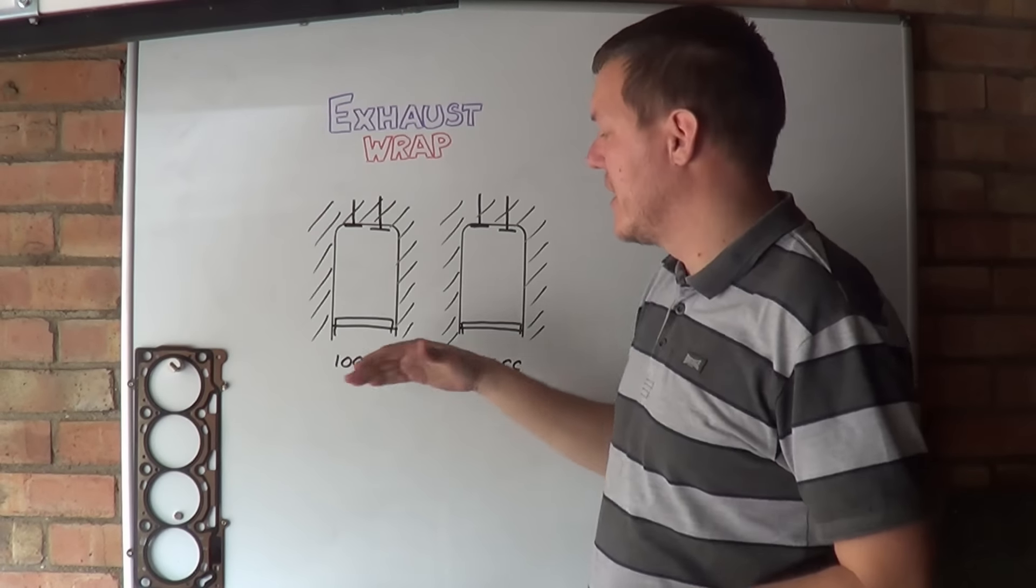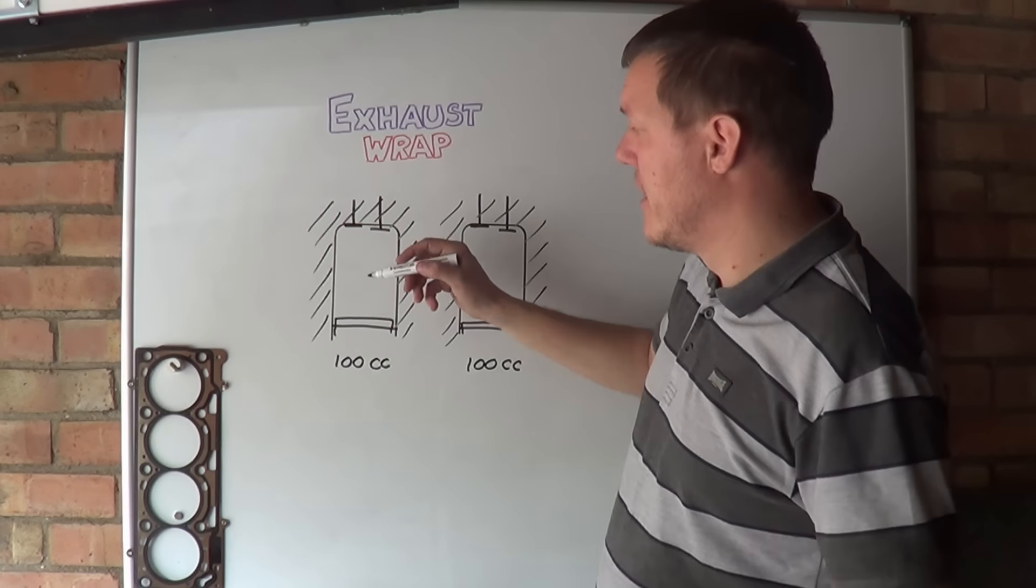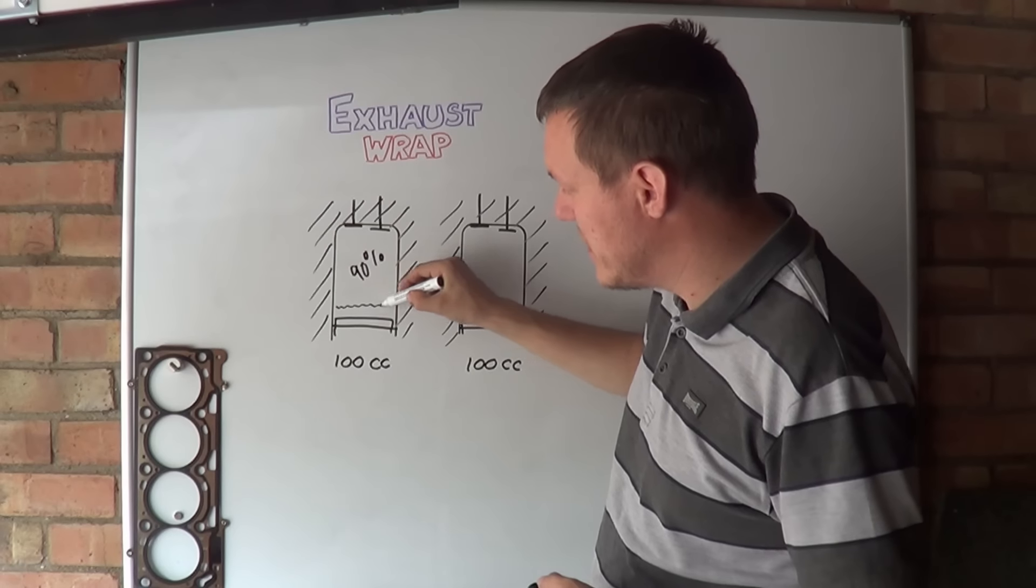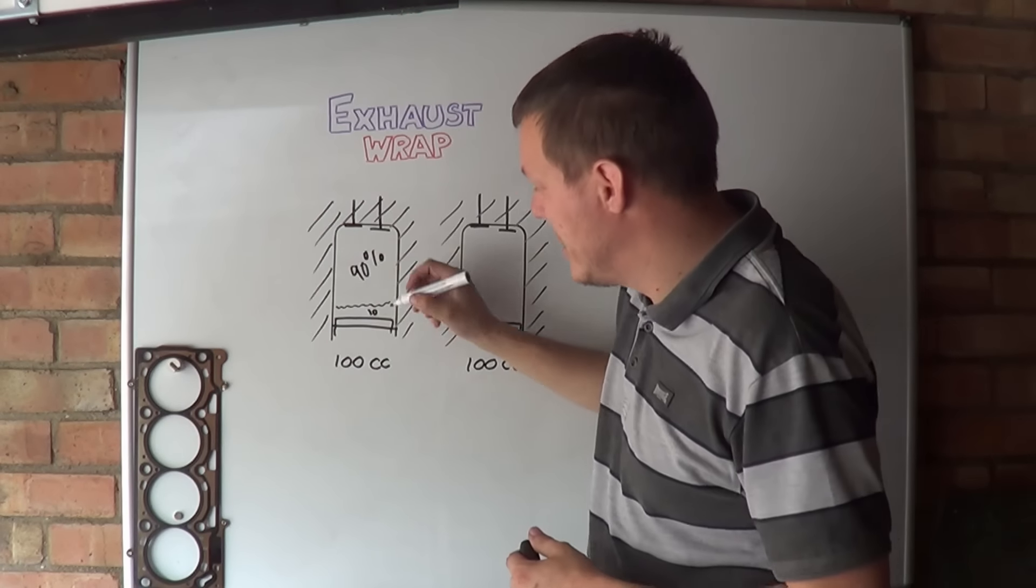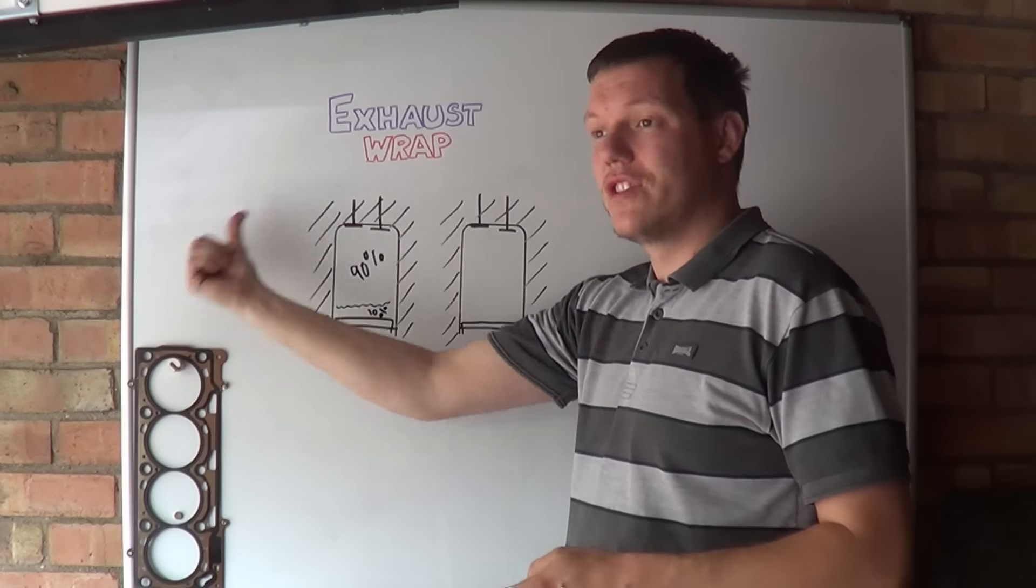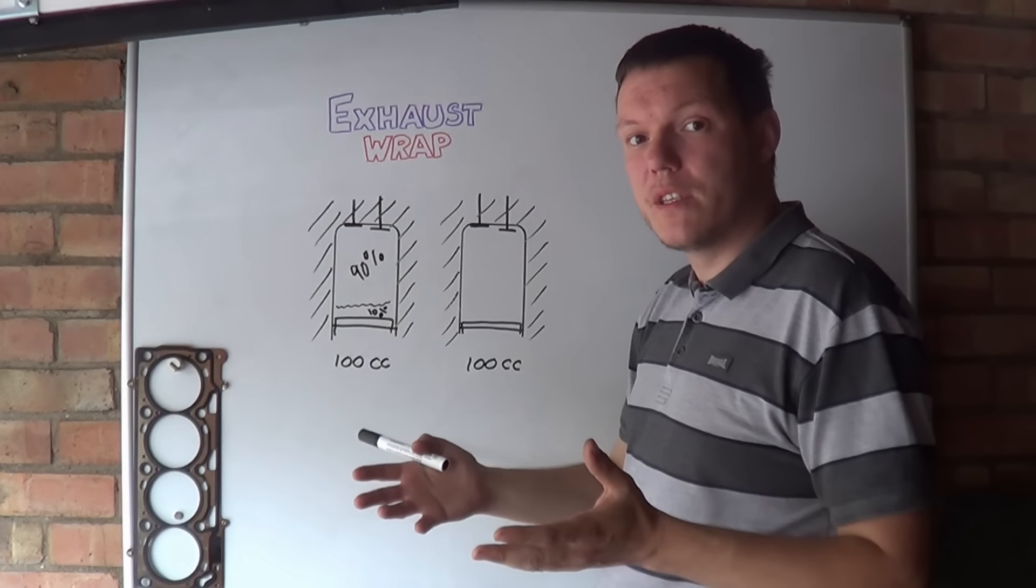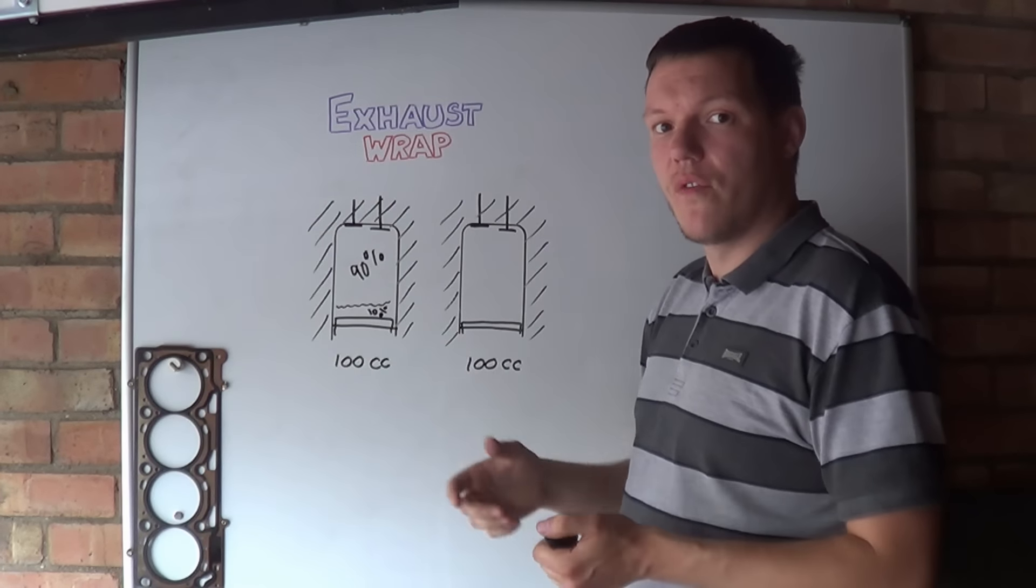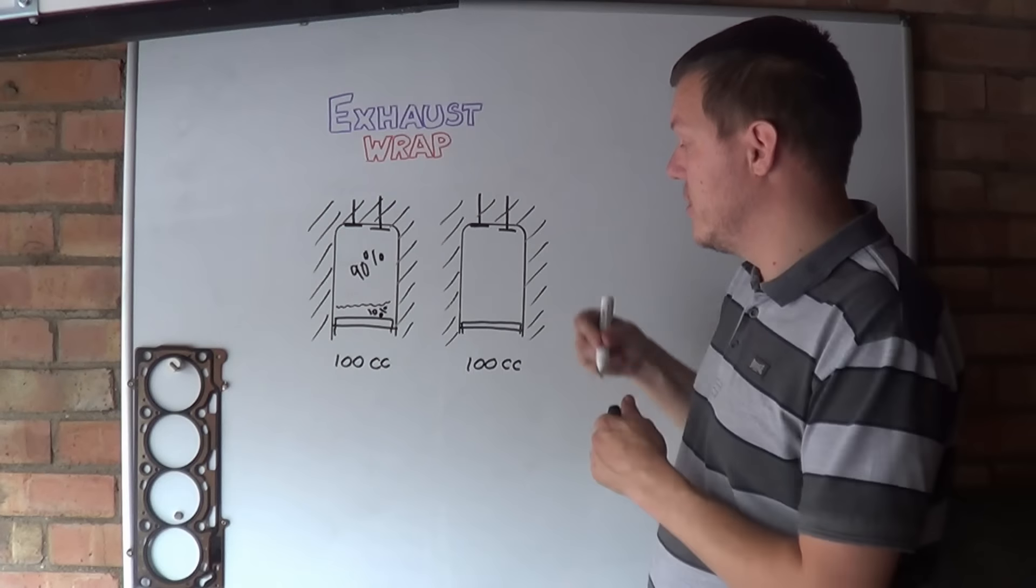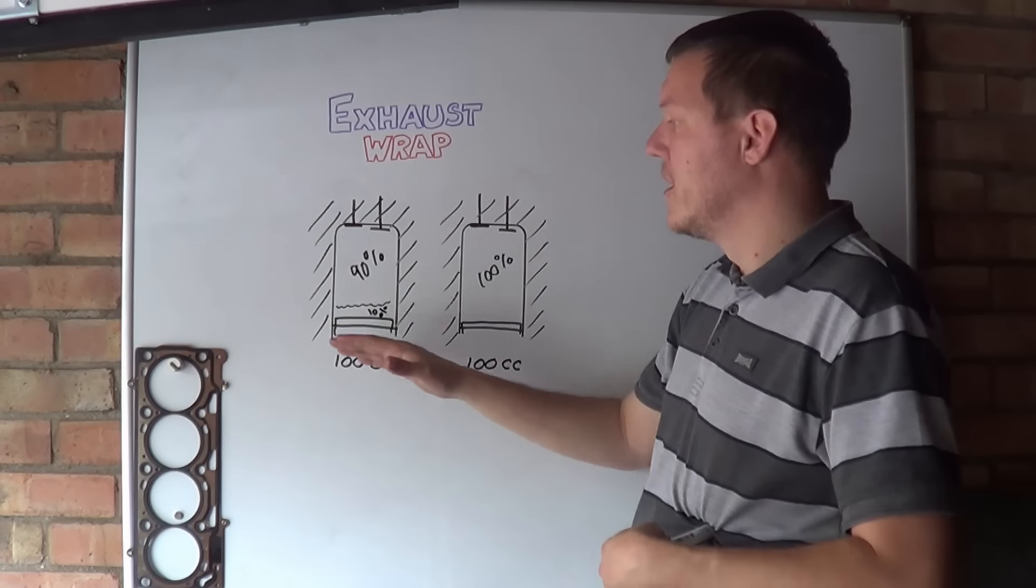Exhaust scavenging has to do with evacuating the cylinder before the intake stroke that follows. If we have a 100cc cylinder and 90% of the exhaust gases have been evacuated, this means 10% in the cylinder is still going to be exhaust gases. Which means that when the cylinder ingests a fresh charge, you only get 90% that is actually fresh air and fresh mix ready to be ignited. So you are losing 10% of your volume. If you can increase the efficiency of the exhaust gas scavenging, you are getting closer to your 100%.